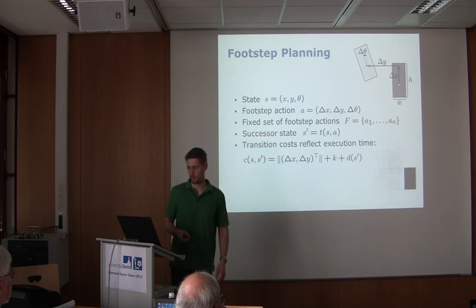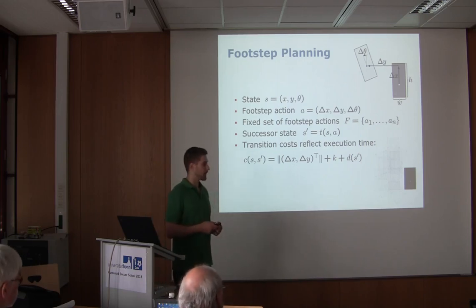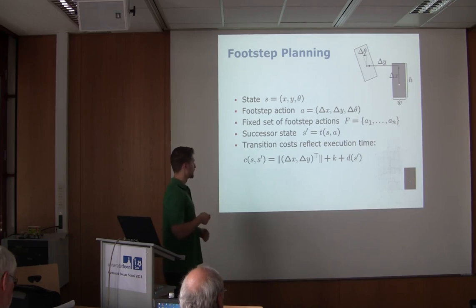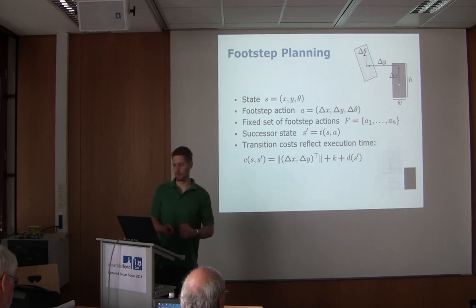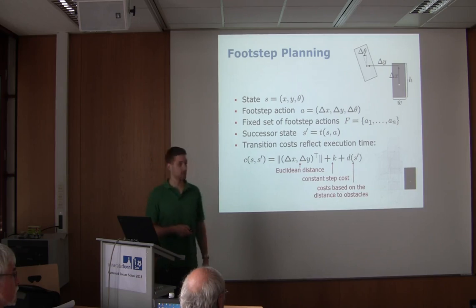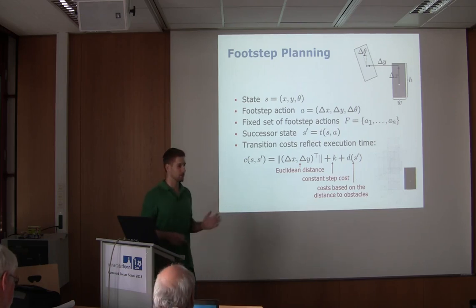We need a useful cost function. Since we want to find efficient paths to the goal, costs should reflect the execution time. You can either assign measured execution times to each step, or assign costs based on how far you're stepping — longer steps take a bit longer — plus a constant term depending on step frequency. You can also add distance costs based on proximity to obstacles, which may give more robust results.